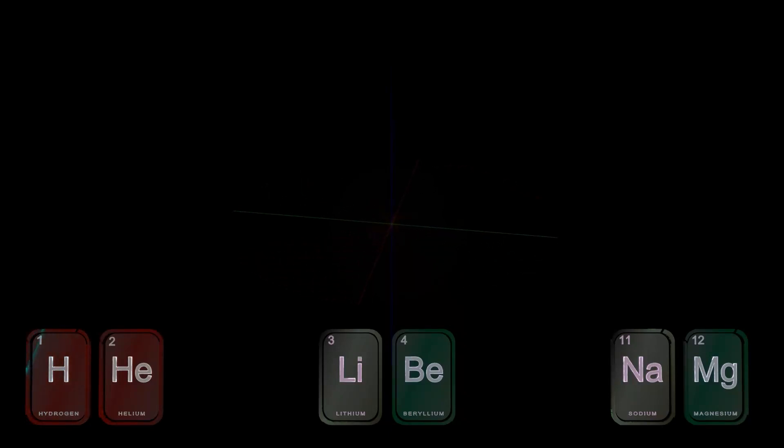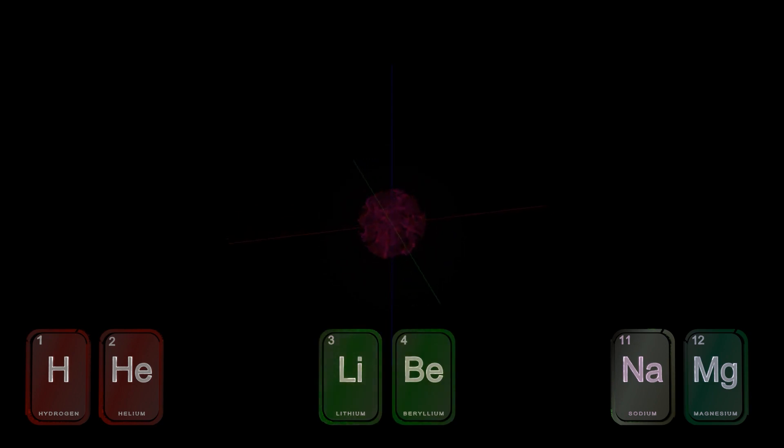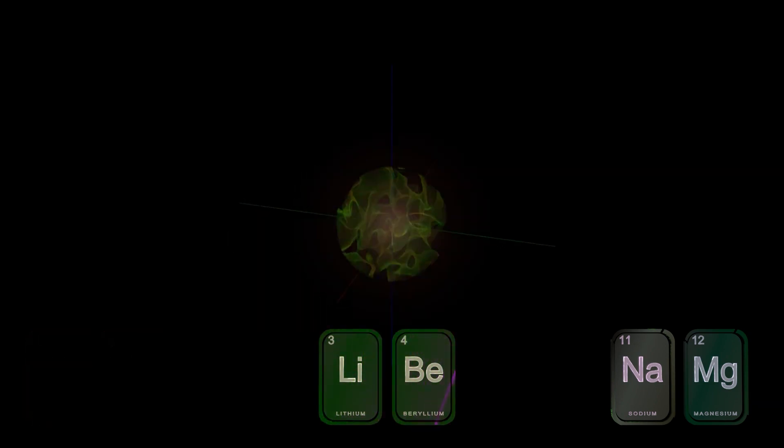Our last video showed hydrogen and helium with electrons in the S subshell. Then, as N equals 2, lithium and beryllium, this S subshell was just a bit larger spherical cloud.